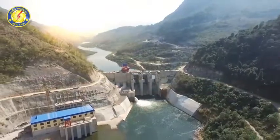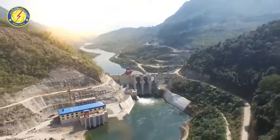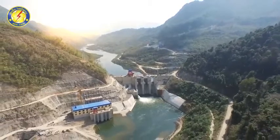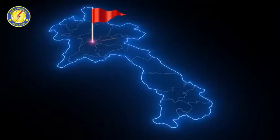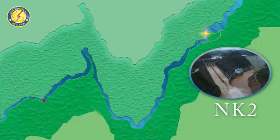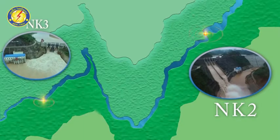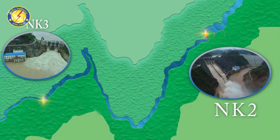Nam Khan 3 Hydropower Plant, or Nam Khan 3 HPP, is located between Don Mo and Samakisai Village, Sieng Nguyen District, Luang Prabang Province — about 24 km along Road No. 13 north from central Luang Prabang. The project is about 54 km from Nam Khan 2 HPP by road, and 25 km by the Nam Khan River.